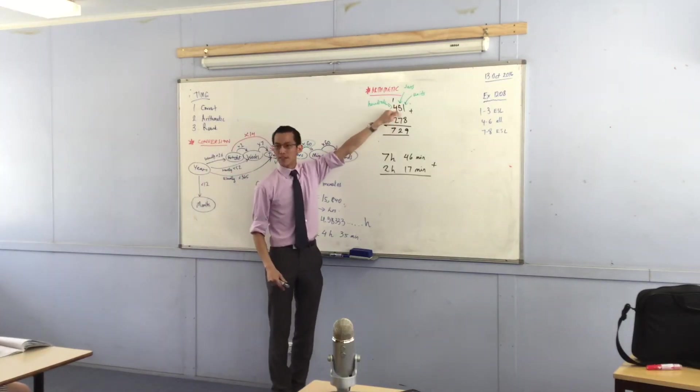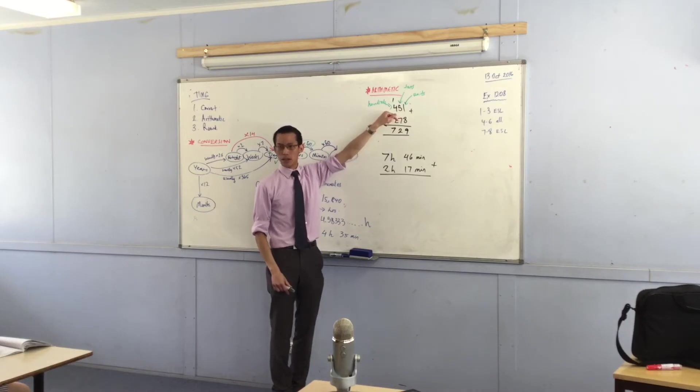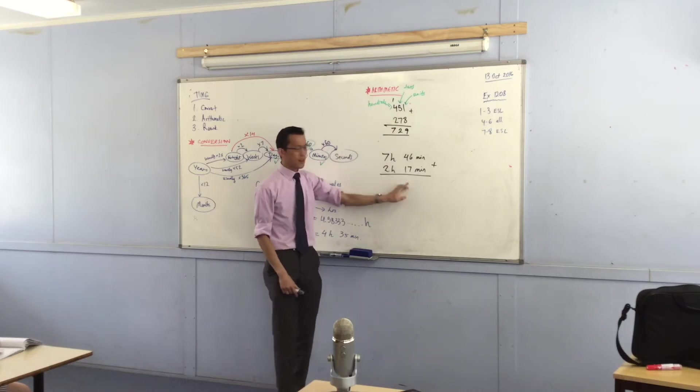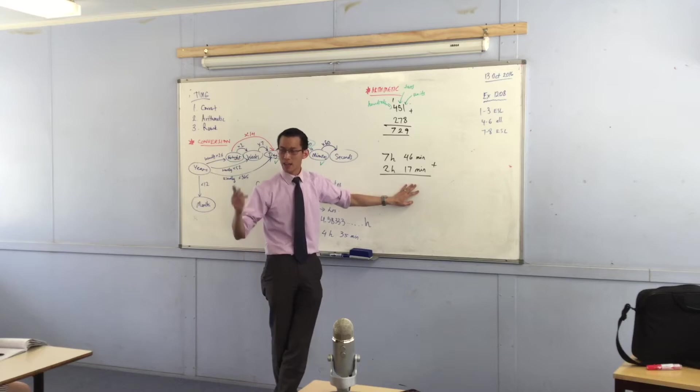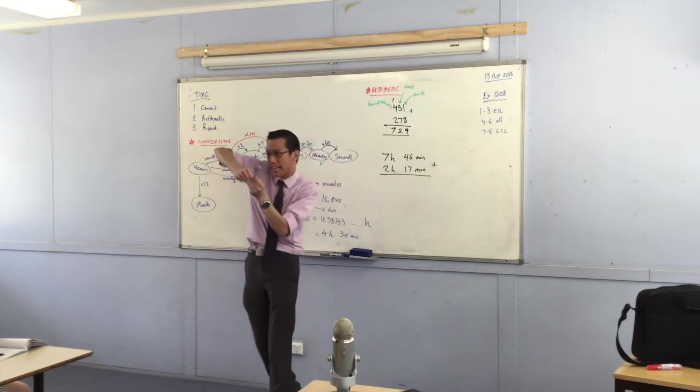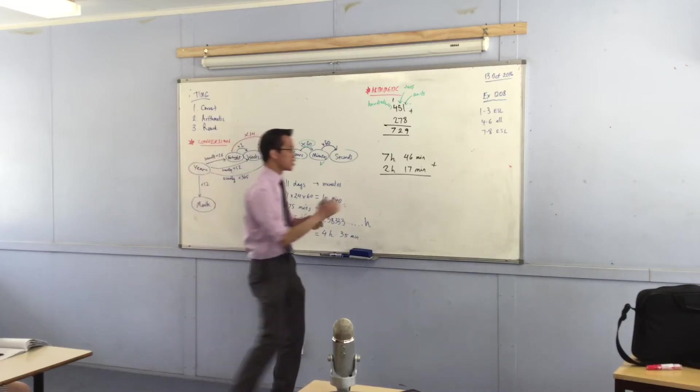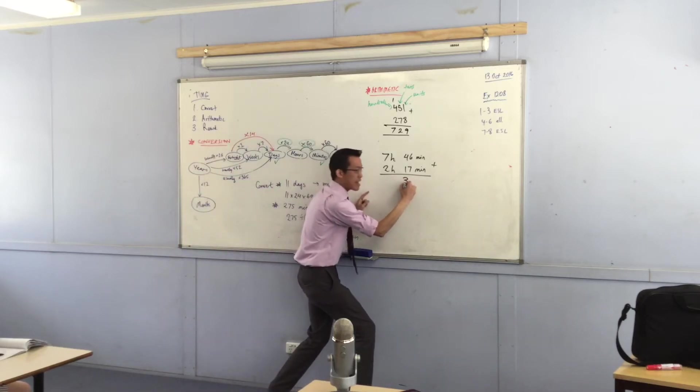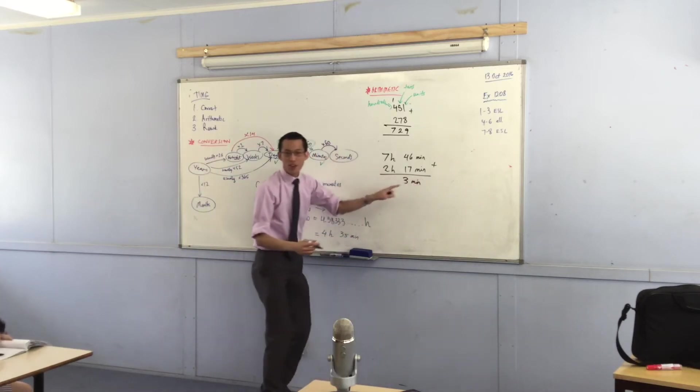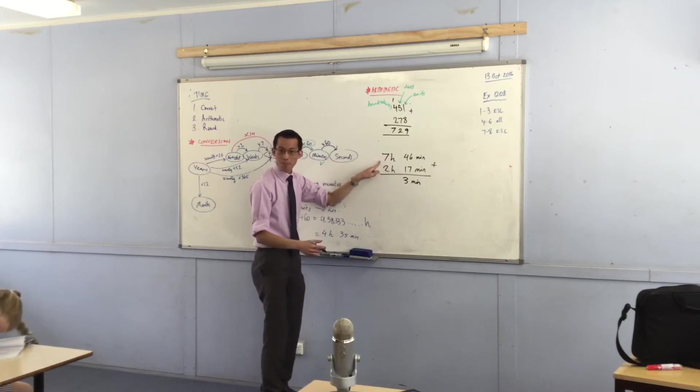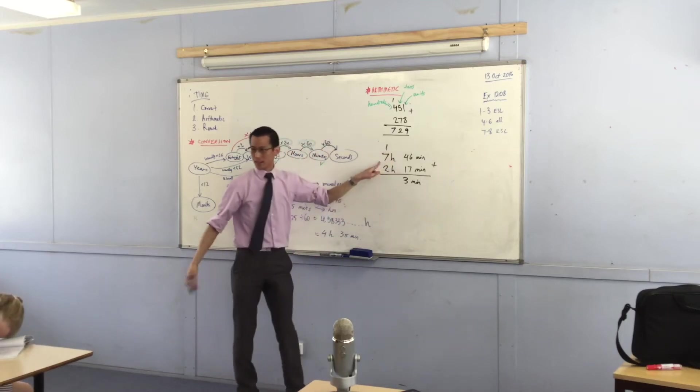Now, when you added 5 and 7, you carried the 1, right? But you don't carry 1s when you're doing time. 63 minutes. What am I going to carry out of there? I'm going to carry 60 minutes. So that leaves me with 3 minutes here. And those 60 minutes become 1 hour over here. Does that make sense?